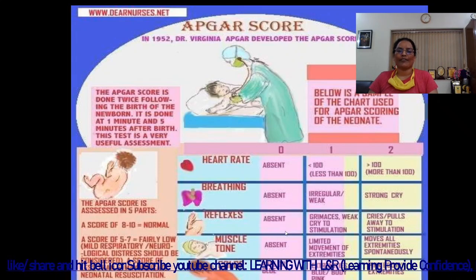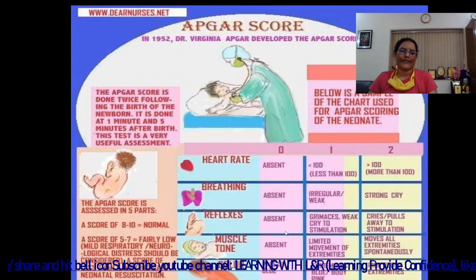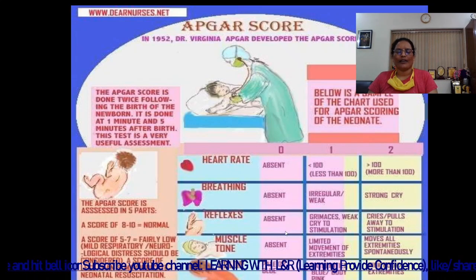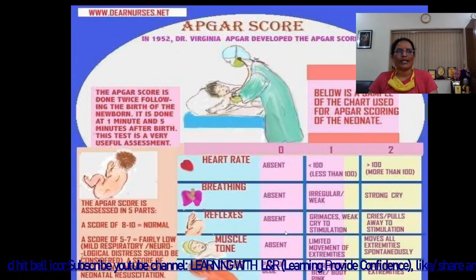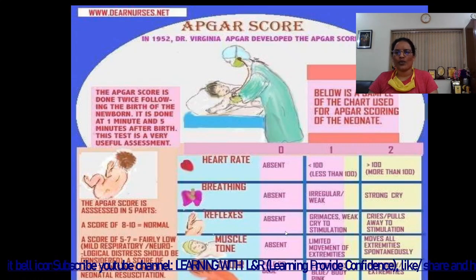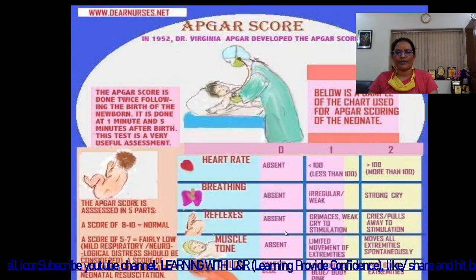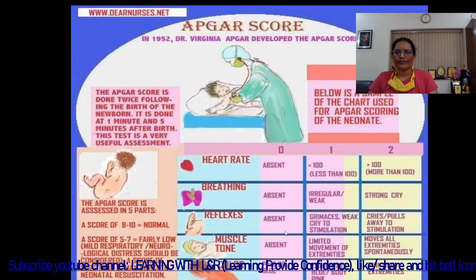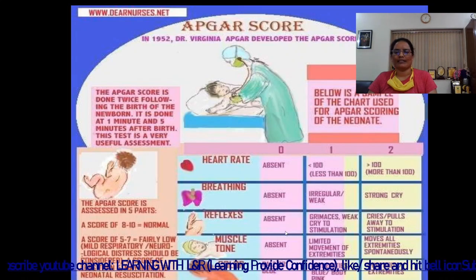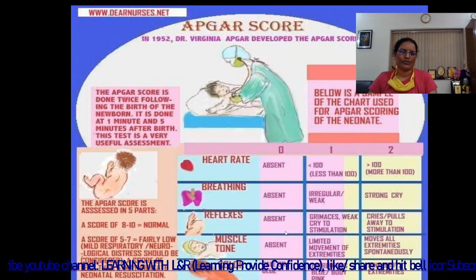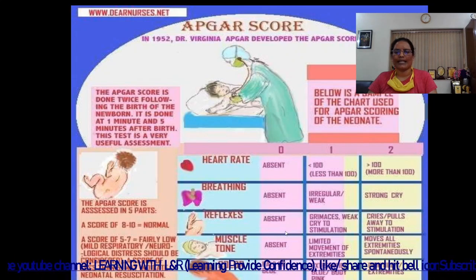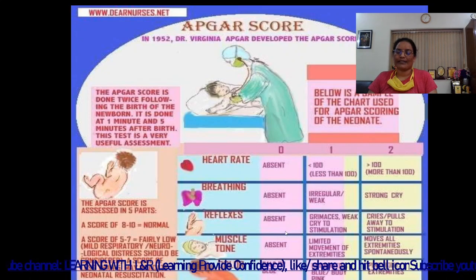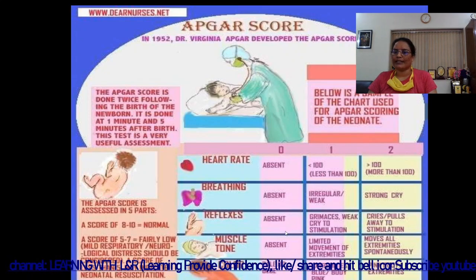There are five components in the Apgar score: heart rate, breathing, reflexes, muscle tone, and color. Each is scored zero, one, or two, giving a maximum score of ten and a minimum of zero. For heart rate: absent scores zero, less than 100 scores one, and more than 100 scores two.